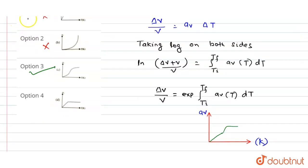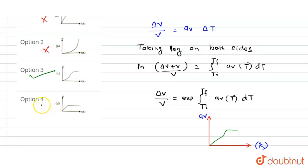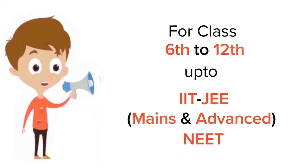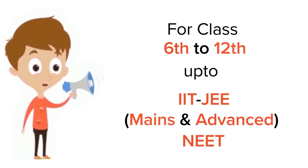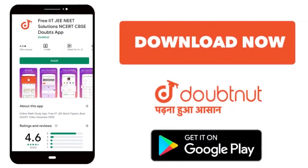Now we check the fourth option. This is not non-linear, so option four is wrong. The correct option is option third. I hope you understood, thank you. For class 6 to 12, IIT-JEE and NEET level, trusted by more than 5 crore students, download Doubtnut today.